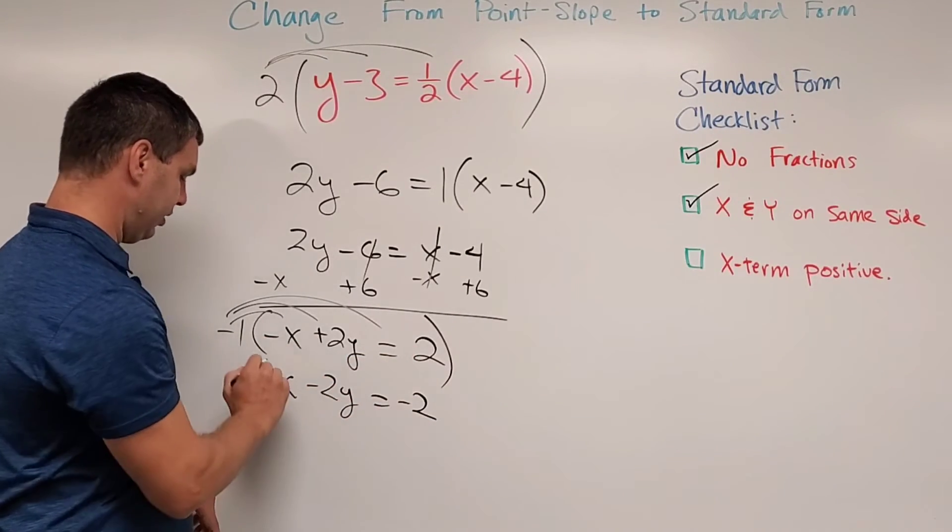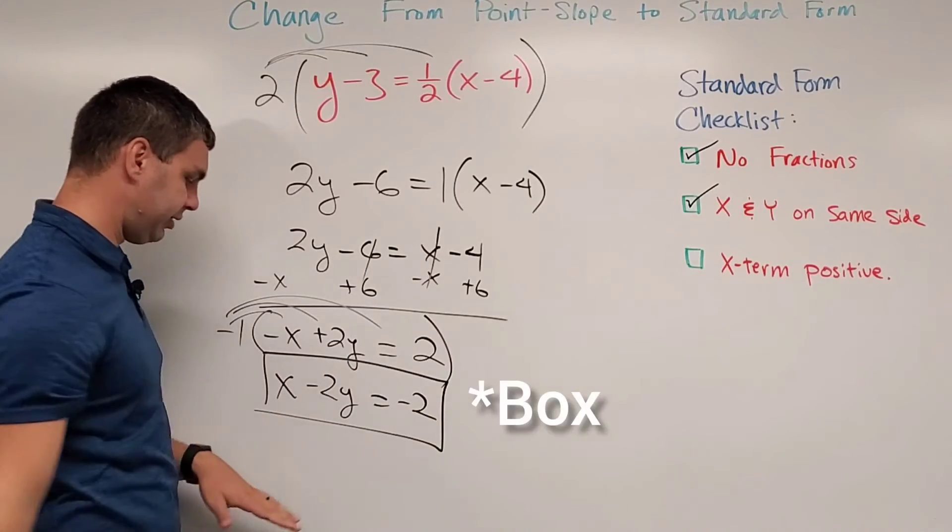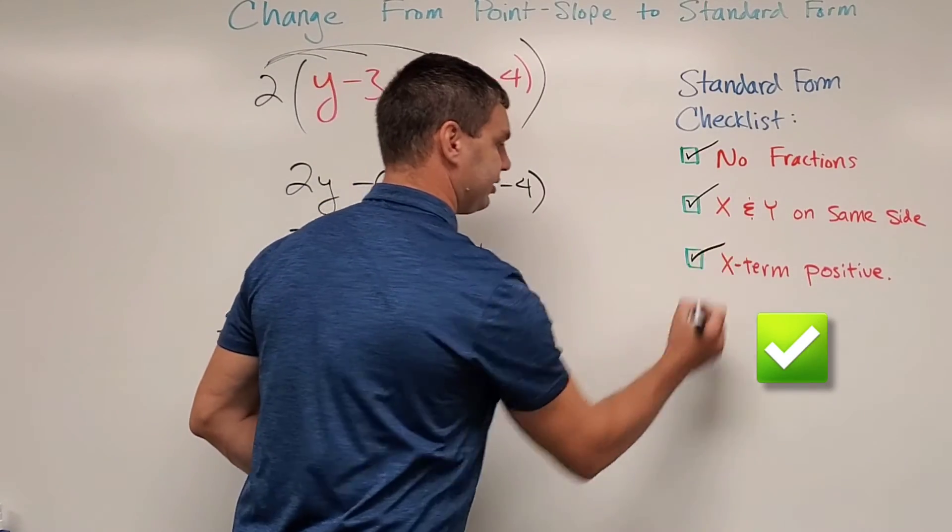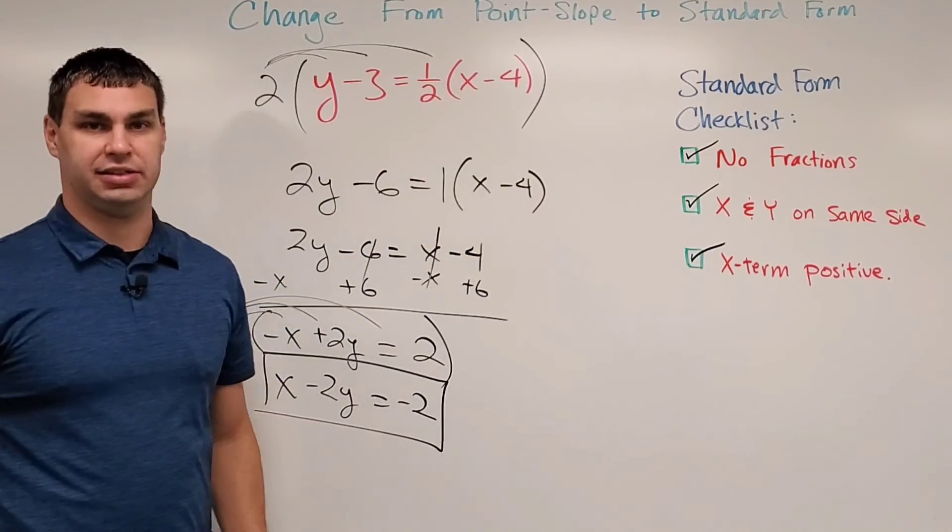And I'm going to circle my answer here because x minus 2y equals negative 2, everything is satisfied on our checklist, so that is in standard form.